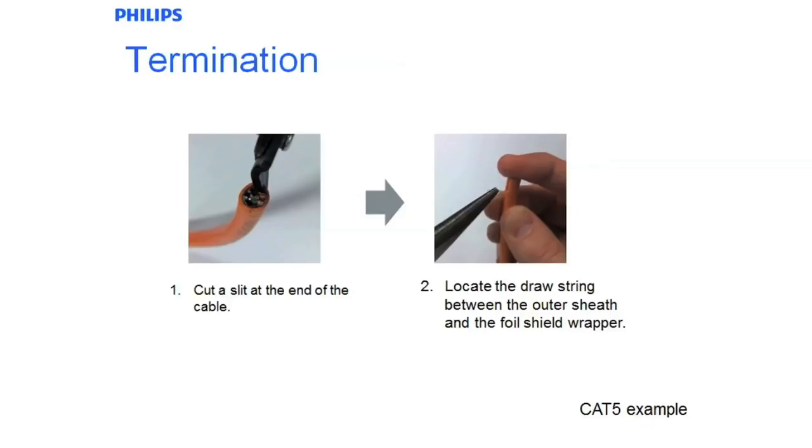Now we will go through the terminations for the typical orange Dynalite Cat5 cable. We cut the slit at one end and strip the cable back. Locate the drawstring which is in between the outer sheath and foil shield wrapper and pull downwards and cut a 90mm snip out of the sheath and then cut away the outer sheath.